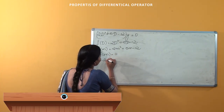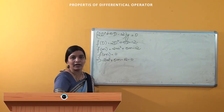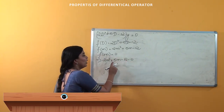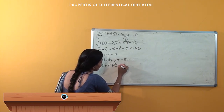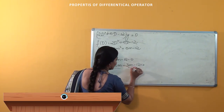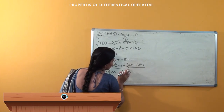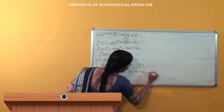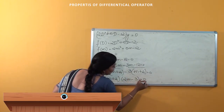To find the roots of the auxiliary equation, we substitute f(m) = 0. This implies 2m² + 5m - 12 = 0. This is now a quadratic equation. On multiplication I should get -24 and on addition I should get +5. That is 2m² + 8m - 3m - 12 = 0. Grouping: 2m(m + 4) - 3(m + 4) = 0, so (m + 4)(2m - 3) = 0.